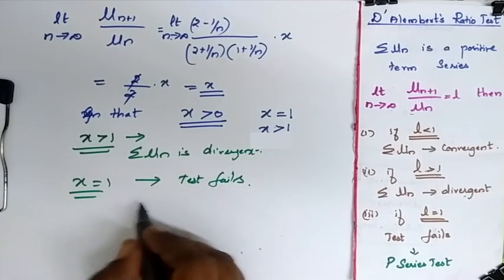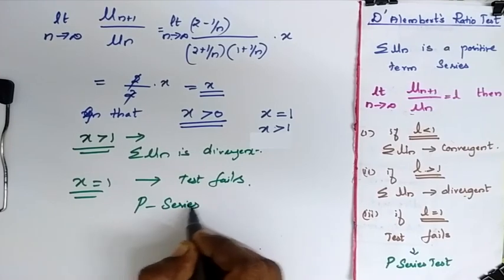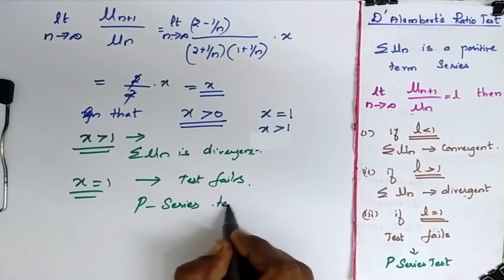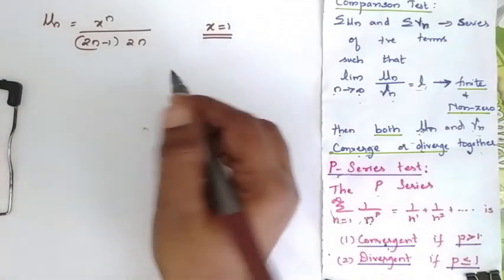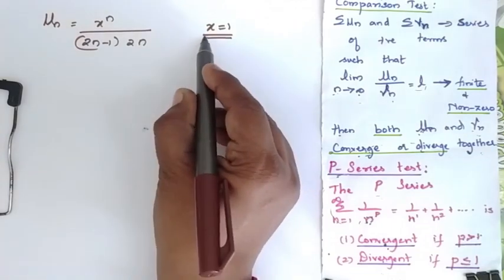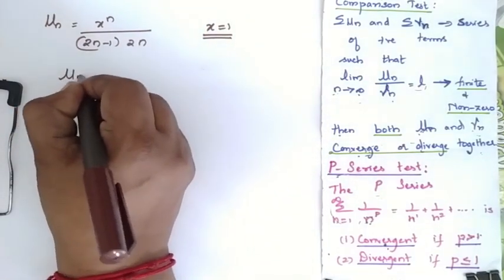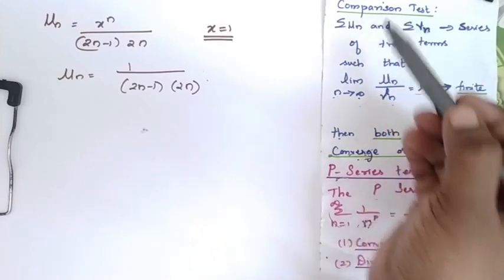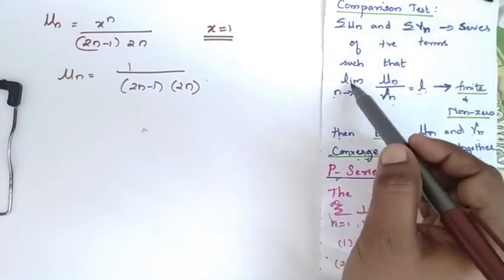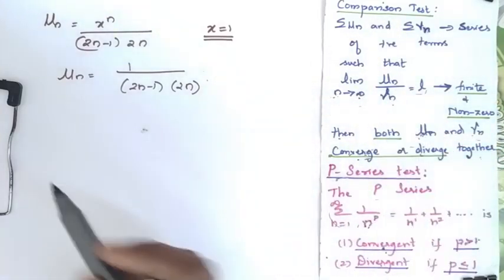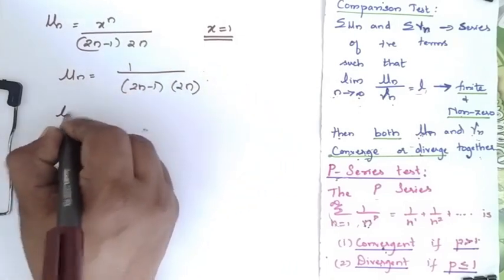So I have to move to the P-series test. Now with x equal to 1, I go for the comparison test and P-series test. I have to find the limit as n tends to infinity of un by vn.